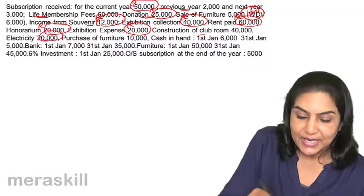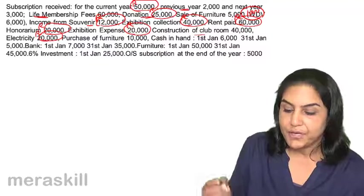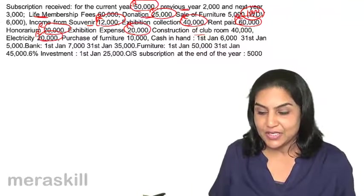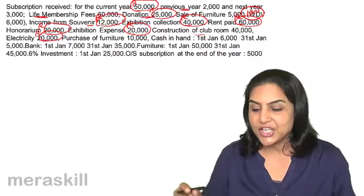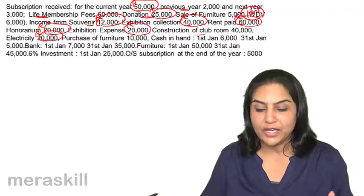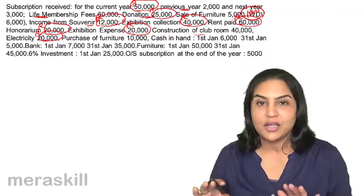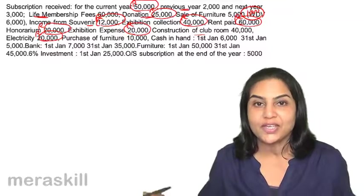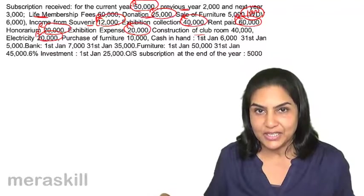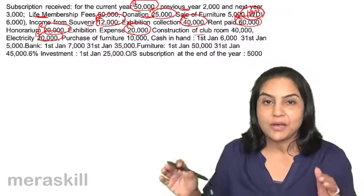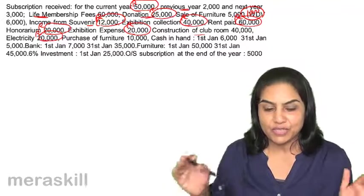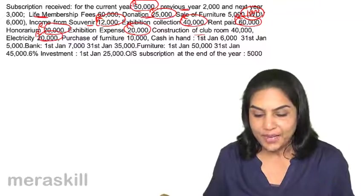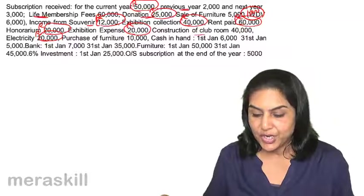Electricity is revenue. Purchase of furniture is capital. Cash in hand — opening and closing — income and expenditure has nothing to do with it. These assets could be reflected in the balance sheet or taken to receipts and payments, but not in the income and expenditure account.